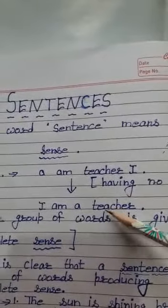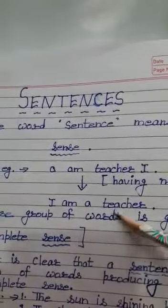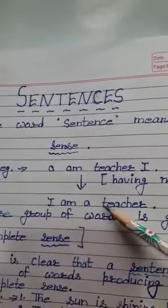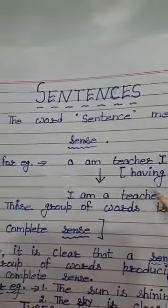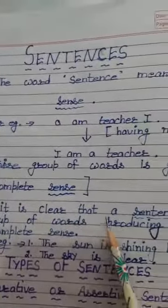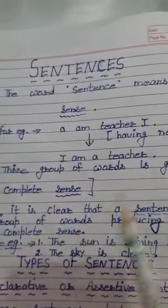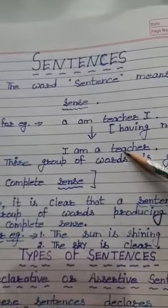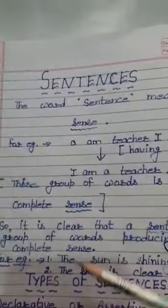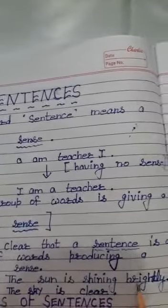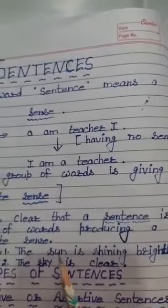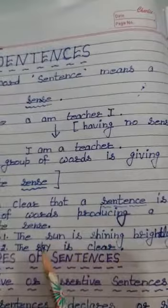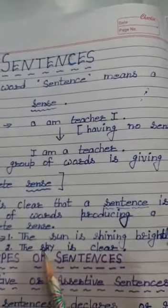Now we see that the group of words are arranged in a systematic manner and they are giving a complete sense, a complete meaning. This is called a sentence. A sentence is a group of words that has some sense — jis ka kuch matlab nikalta hai. For example: 'The sun is shining brightly' — Souraj joh hai woh bhaut tezi se chamak raha hai. Next: 'The sky is clear' — Asman joh hai woh saaf hai.